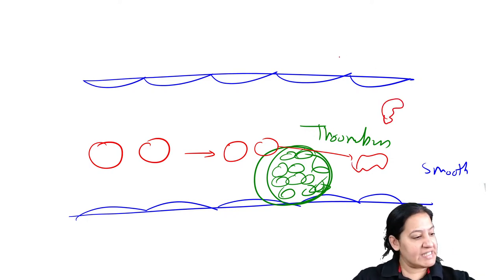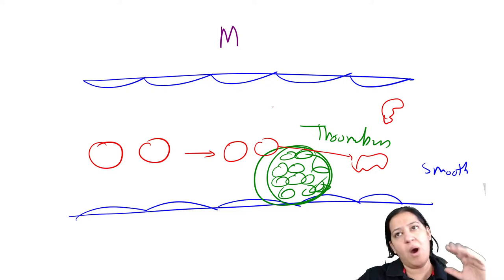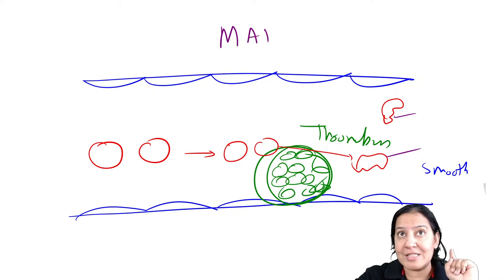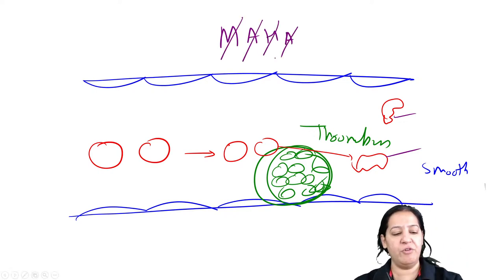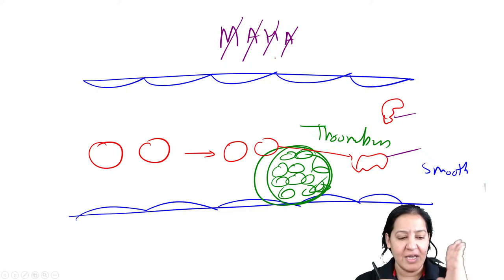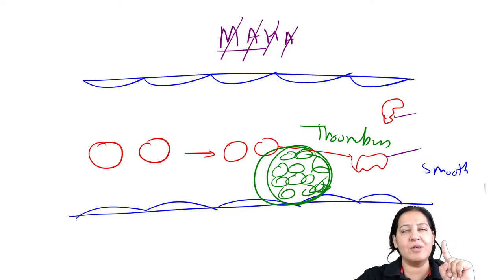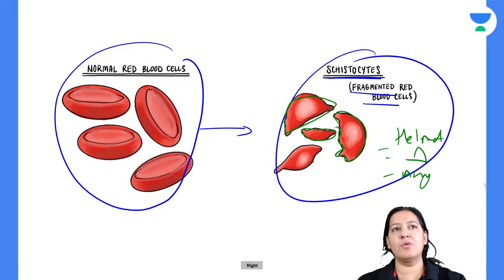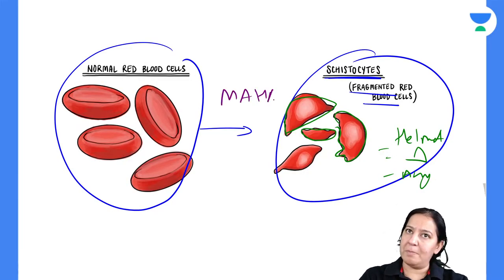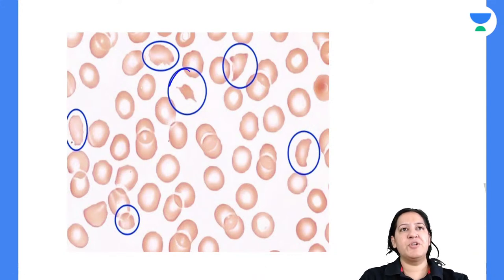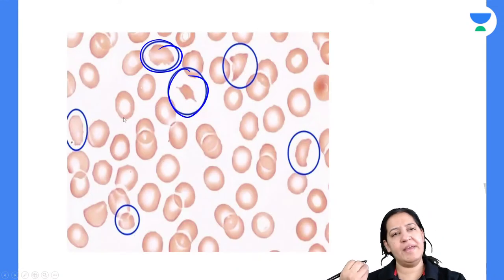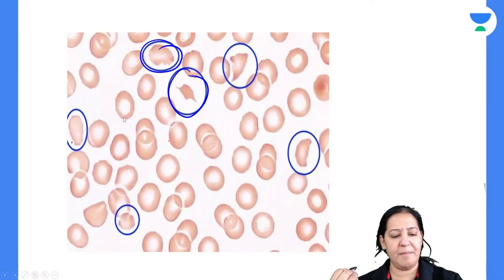MAHA stands for Microangiopathic Hemolytic Anemia. The person has anemia because most RBCs are broken down. Schistocytes form when RBCs collide with thrombus formations inside blood vessels. This is seen in conditions where thrombus is formed — such as HUS (hemolytic uremic syndrome) among others.